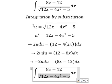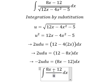So the square root, we change by u. 8x minus 12 dx, we change by this one.